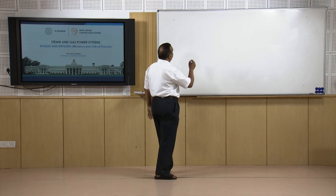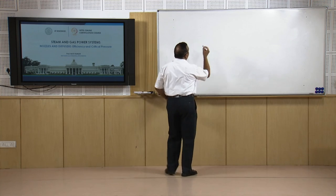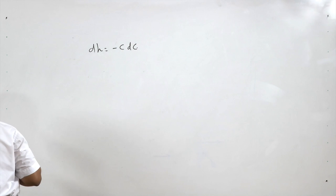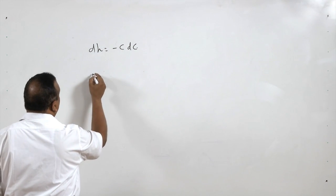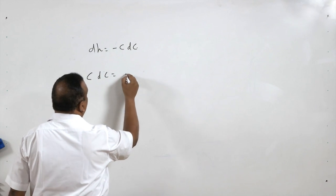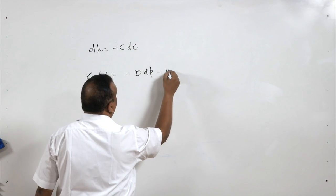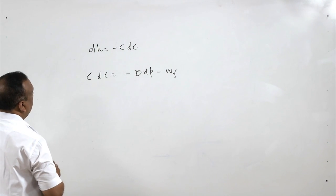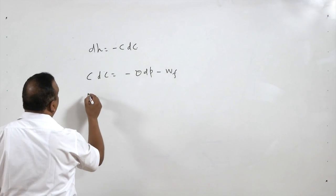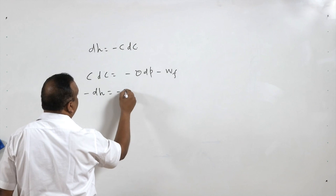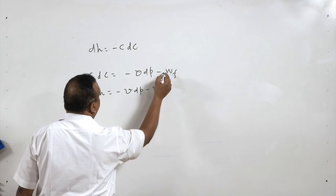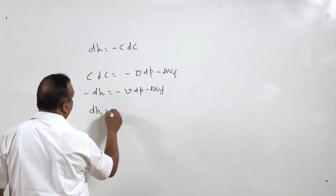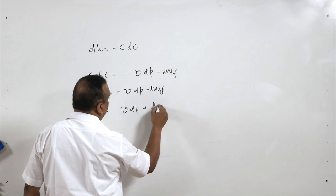For the flow through a nozzle, the change in enthalpy dh is equal to minus C dc, which is the change in kinetic energy. From momentum equations we have derived that C dc is equal to minus V dp minus Wf, where V is the specific volume and Wf is the friction loss. Comparing these two equations, we get dh is equal to V dp plus dWf.